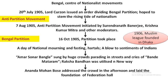It was very important for British authorities to curb the growing power in Bengal. At that time, the Viceroy Lord Curzon, around 1905, issued an order on 20th July, saying that Bengal is a very big province and we cannot administer it properly, so we have to partition it into East Bengal and West Bengal.